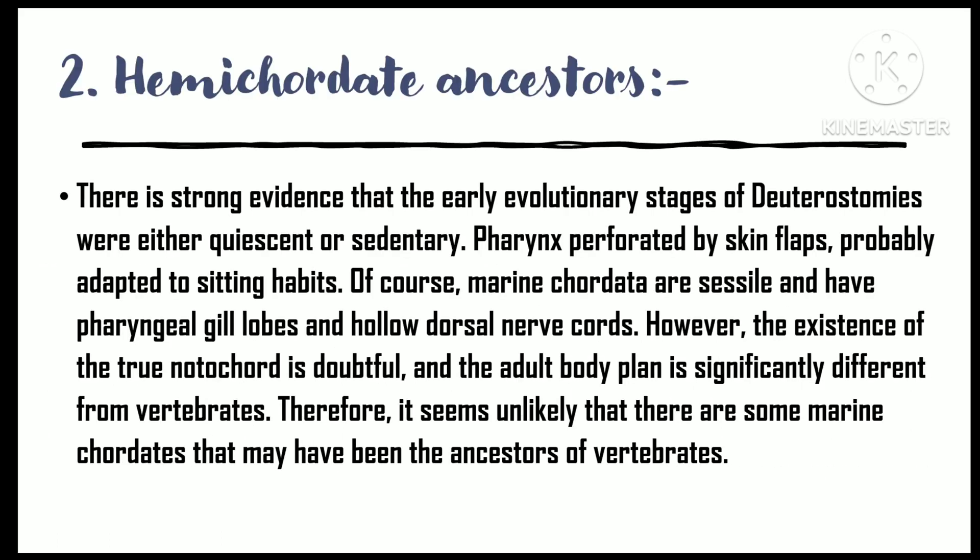There is strong suggestive evidence that the early evolutionary stages of deuterostomia were sessile or sedentary. The pharynx perforated by gill slits is likely an adaptation to a sedentary habit. Hemichordates are sedentary and have pharyngeal gill slits and a hollow dorsal nerve cord. Nevertheless, the presence of a true notochord is doubtful and their adult body plan is quite different from vertebrates. Therefore, the perspective of some hemichordates as a likely ancestor of vertebrates seems to be impossible.